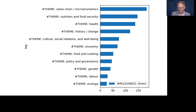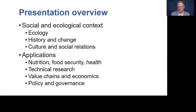Our goals in today's webinar are: first, to summarize the dominant perspectives and approaches in the research according to each theme; second, to provide selected examples of significant, unique, or otherwise helpful research contributions; and third, to identify knowledge gaps and how they might be addressed through transdisciplinary research. I'll present the first four themes: ecology, history and change, culture and social relations, and nutrition, food security, and health.